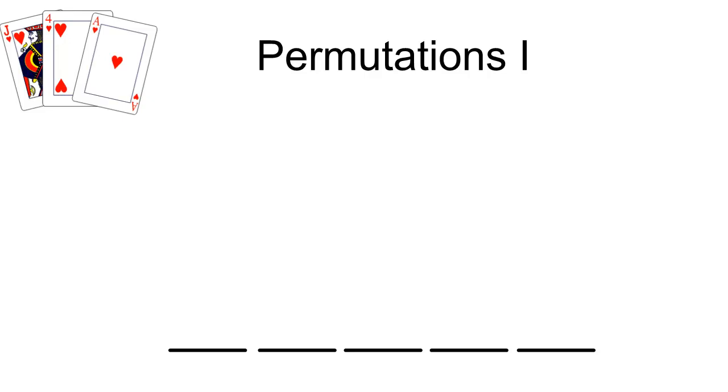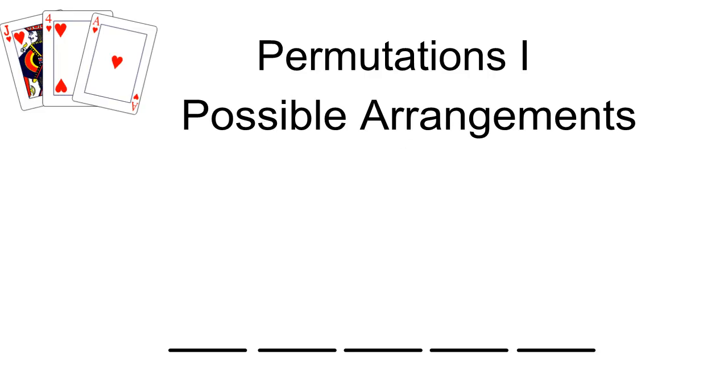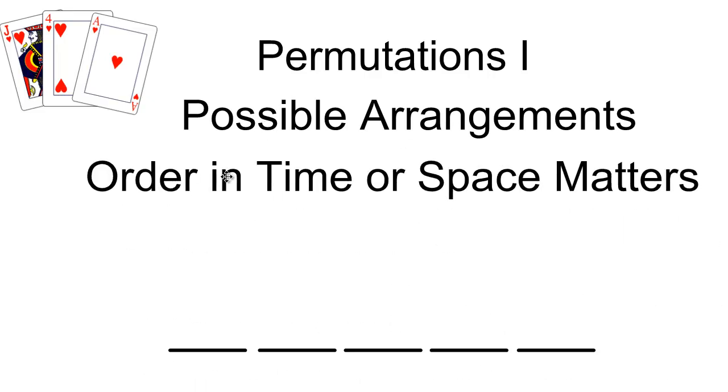We're going to be looking at permutations. Now permutations refers to the possible arrangements of objects. When we're talking about permutations, order in time or in space matters.